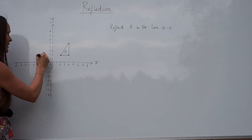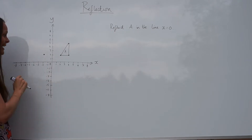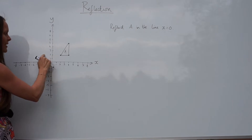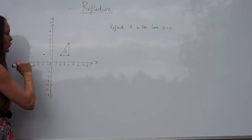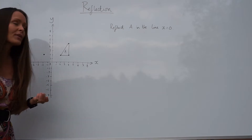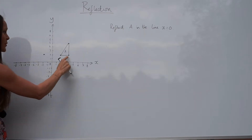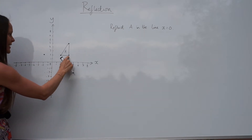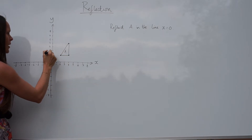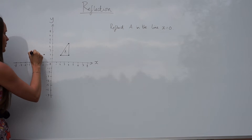So it should be here — they're exactly the same distance away from the mirror line. Then you can just do the same thing for all the other points. This point here is four units from the mirror line, so you count one, two, three, four on the other side, and you have the second point.